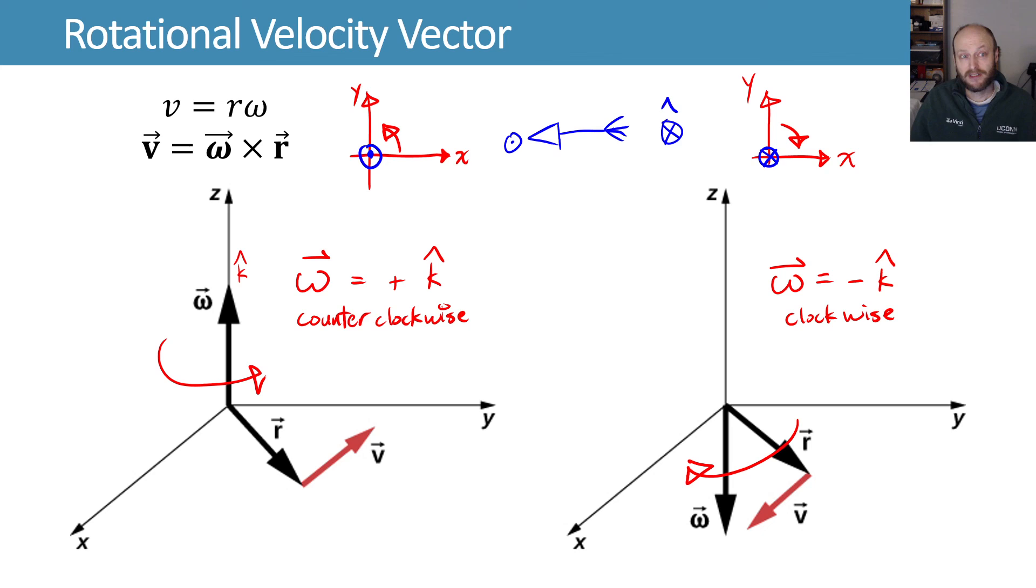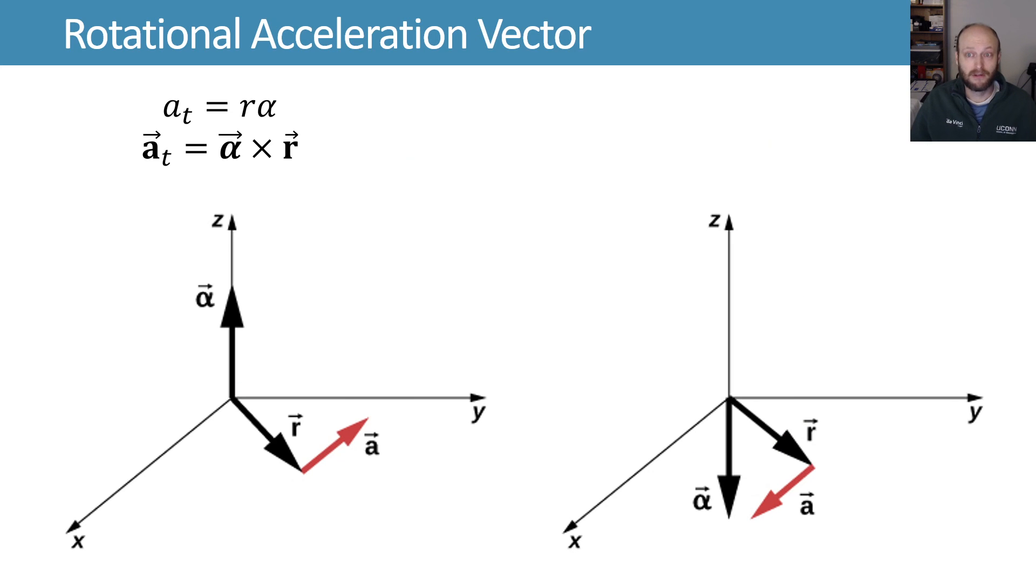We've done position and velocity. Let's go ahead and do acceleration here. My tangential acceleration is r alpha. Vector-wise, that vector is equal to alpha crossed with r. Again, the direction of the cross product matters, because it'll give you opposite directions if you start with one versus starting with the other.